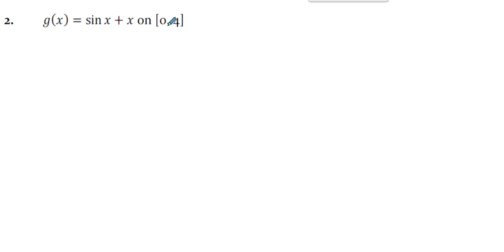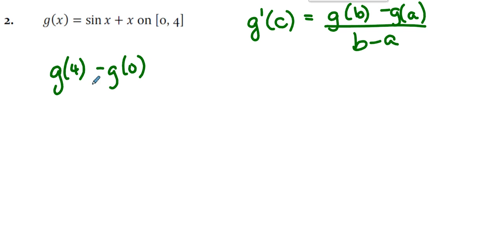What are we looking for here? We're looking for the value of c, value or values of c for which g prime of c is g of b minus g of a over b minus a. In this case, a is 0 and b is 4. So we're looking for g of 4 minus g of 0 over 4 minus 0. And you can substitute 4 and you can substitute 0 and you get sine of 4 plus 4 over 4.